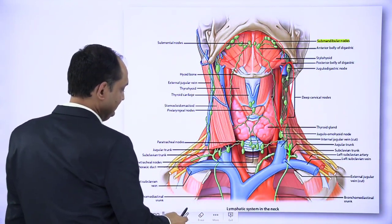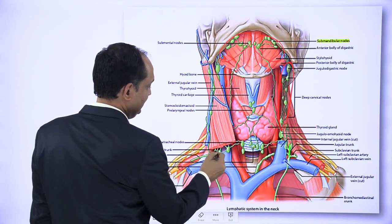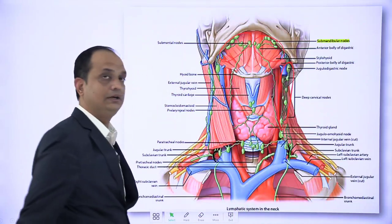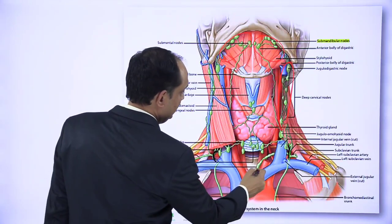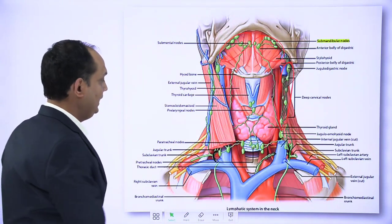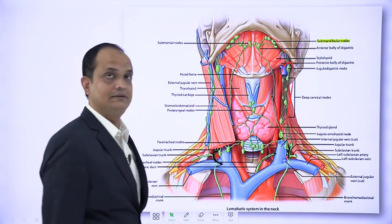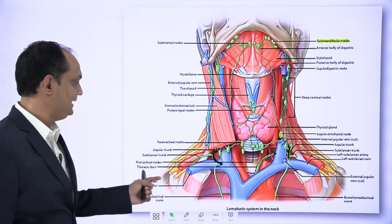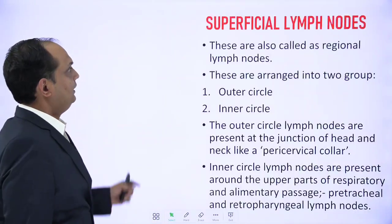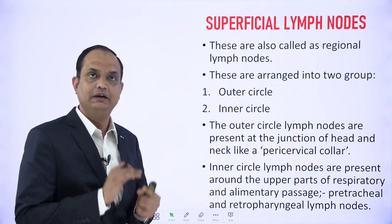The jugular trunk is present on both right and left sides. The left jugular trunk opens into the thoracic duct — which has a beaded appearance — while the right side jugular trunk directly opens into the venous system at the junction of the right subclavian and right internal jugular vein.